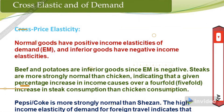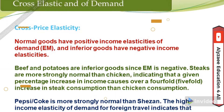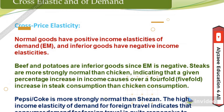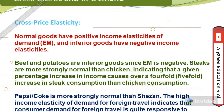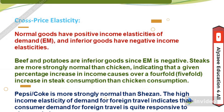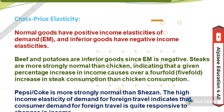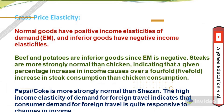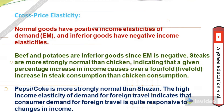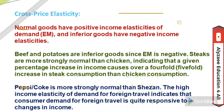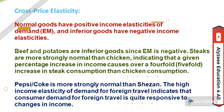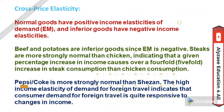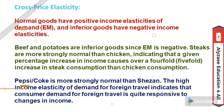Normal goods have positive income elasticity of demand, and inferior goods have negative income elasticity. For example, beef and potatoes are inferior goods since their income elasticity (EM) is negative. Steaks are more strongly normal than chicken, indicating that a given percentage increase in income causes a four to five fold increase in steak consumption compared to chicken consumption.